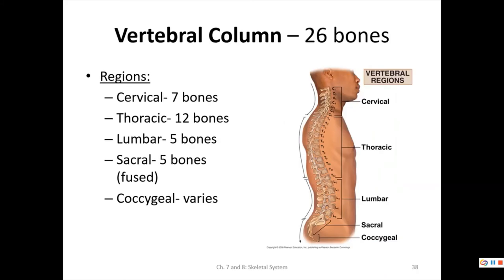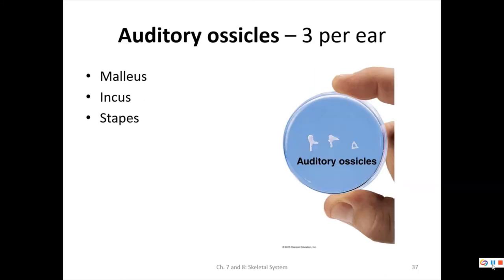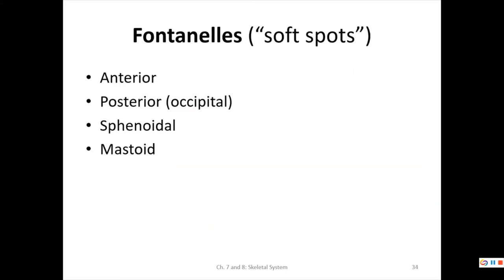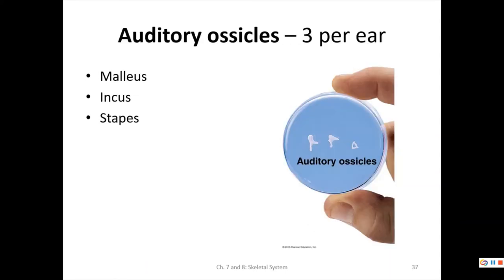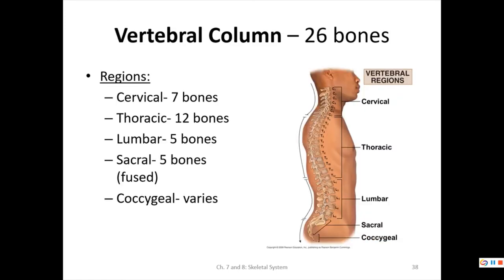I encourage you to take a short break here. For the exam, I'll have labeled photographs of the bone models on D2L, similar to the tissues exam — pictures of bones with red arrows asking you to name the bone or specific structure. Go ahead and pause, then we'll continue with the vertebral column.